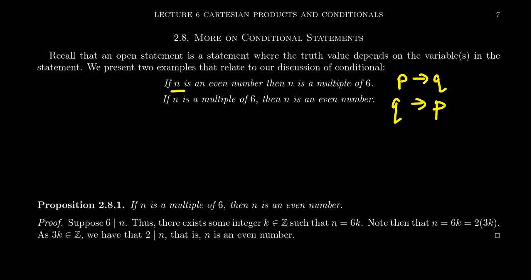When we look at the first conditional, the truth value shifts based on the value of n. If we pick n equals 12 — 12 is an even number and it's a multiple of 6 — so in this situation it's a true statement. But conversely, if we take n equals 4 — 4 is an even number, but it's not a multiple of 6 — so it would be false in that situation. Depending upon how you choose n, that determines whether this is true or false.